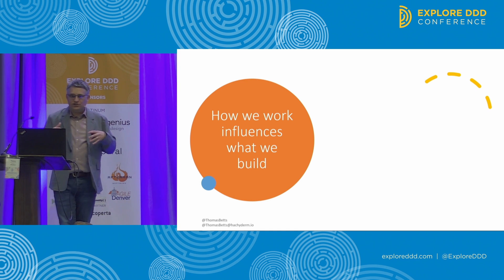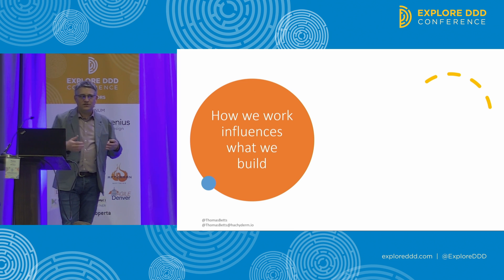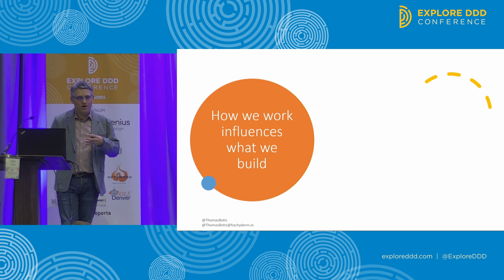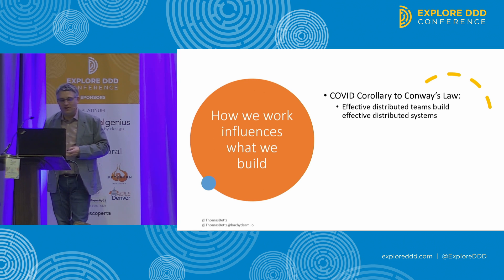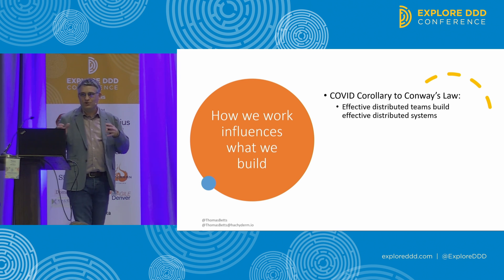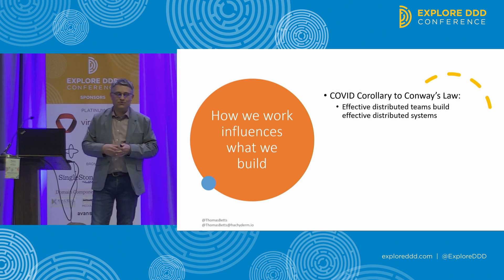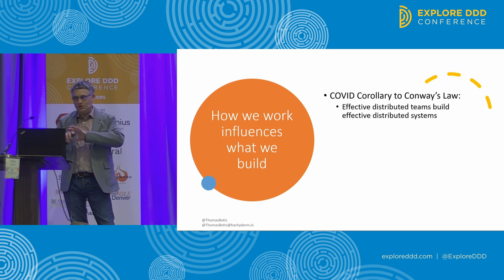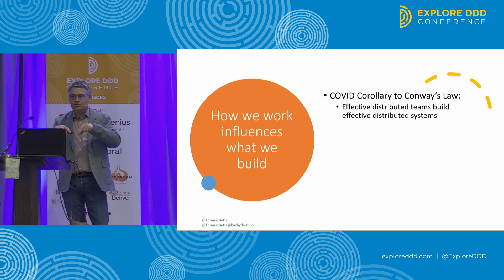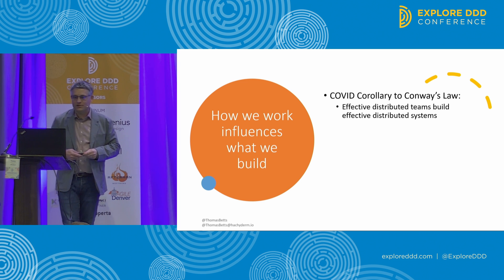We're also seeing that these changes in work habits are influencing the software that gets built. Conway's Law gets called out a lot — we know the architecture of our system is going to reflect the structure of our organization. I noticed something I've called the COVID corollary to Conway's Law: effective distributed teams are able to build effective distributed software. And the flip side: if you and your team struggled when everybody got distributed, it's going to be really hard for you to build distributed software.